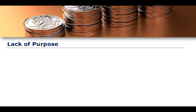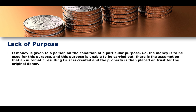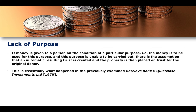An automatic resulting trust can also arise out of a lack of purpose. If money is given to a person on the condition of a particular purpose, but that purpose is unable to be carried out for whatever reason, then there is the assumption that an automatic resulting trust is created, and the property — the money for which that purpose was created — is placed on trust for the original donor.